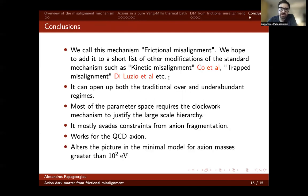I'd like to conclude this presentation by mentioning that we coined the term for this mechanism, frictional misalignment. We hope to add it to a relatively short list of other possible modifications to the standard misalignment mechanism, such as kinetic misalignment, trapped misalignment, and so on. You can pause this video and read the rest of my conclusion. I will simply say that the idea we propose is very simple and it's based on a set of reasonable assumptions, which however have a profound impact in the final axion dark matter abundance. Thank you for listening to my presentation.